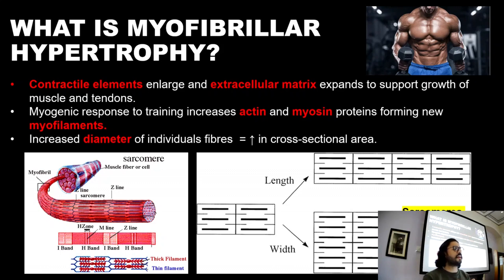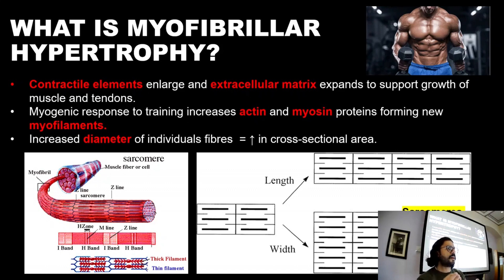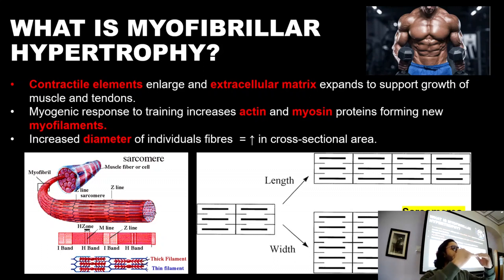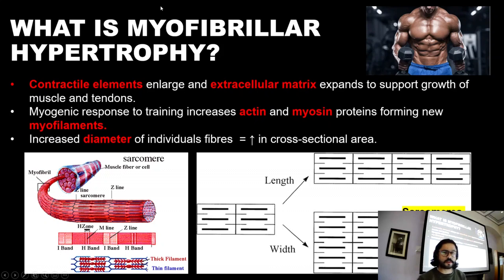The collagen deposition within our tendons increases because they have more load going through them. If you start doing resistance training, the force or load going through the tendon increases, so there's an adaptation. Looking back at what we discussed about the Golgi tendon organ, it becomes able to tolerate a much greater load before it sends an inhibitory signal to the alpha motor neuron to inhibit the contraction. So the tendons become larger, but most importantly, it's the sarcomeres.